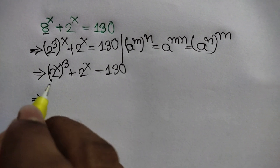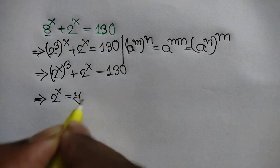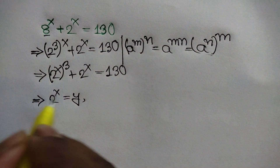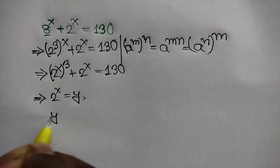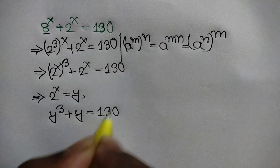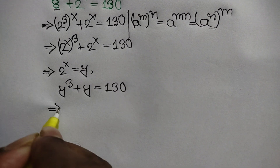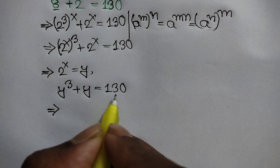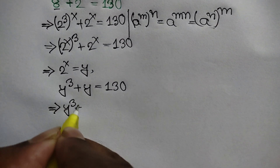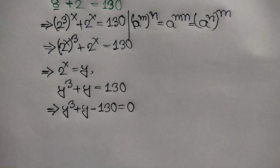Now let's write 2 to the power x is equal to y. So we get y cubed plus y is equal to 130. Taking 130 to the left side, we get y cubed plus y minus 130 is equal to 0.